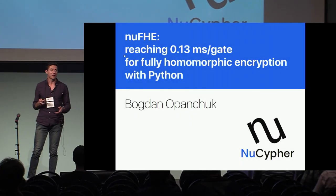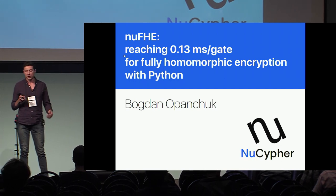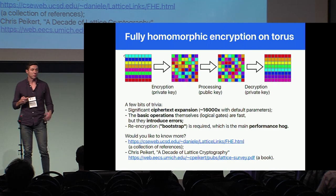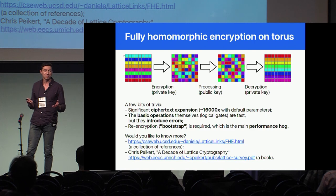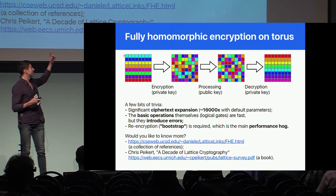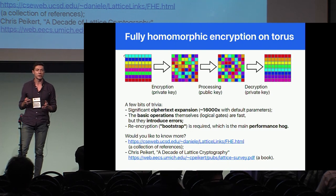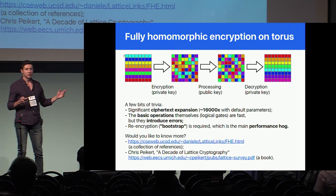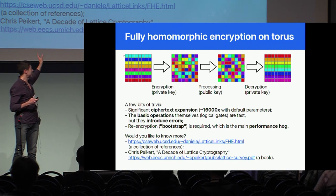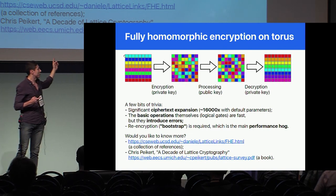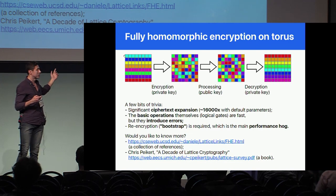This is an announcement for the library we just released on Monday. It's about fully homomorphic encryption. By now you've been to at least one talk about FHE, so you know what it's about. If you want to know more about FHE and the latest cryptography, there are two links here — one is a collection of papers about FHE, and the second is a very good book, a review of FHE.